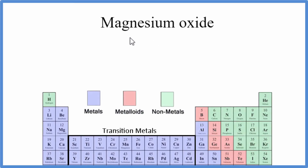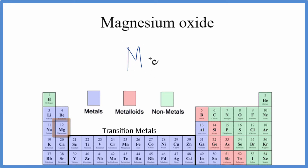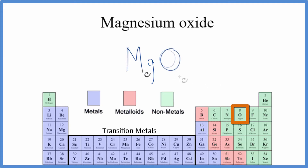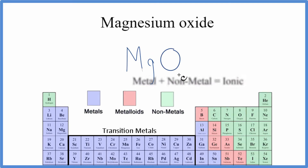To write the formula for magnesium oxide, we go to the periodic table and we can see magnesium — that's Mg — and that's a metal. The oxide, that's oxygen, and that's a non-metal. Since we have a metal and a non-metal, that's an ionic compound.